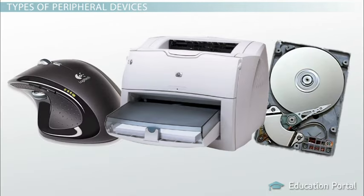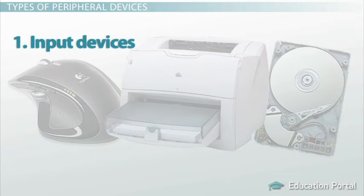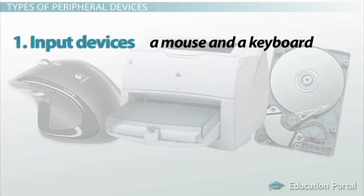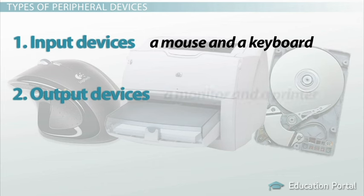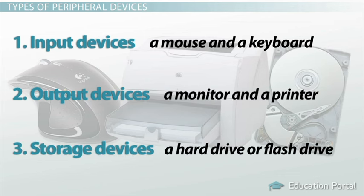There are many different peripheral devices, but they fall into three general categories: input devices, such as a mouse and a keyboard; output devices, such as a monitor and a printer; and storage devices, such as a hard drive or flash drive.